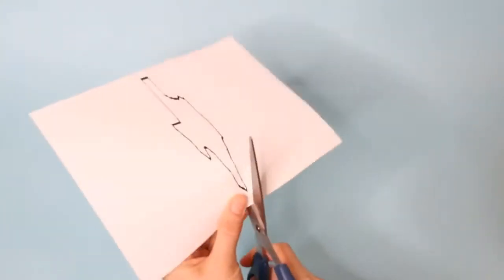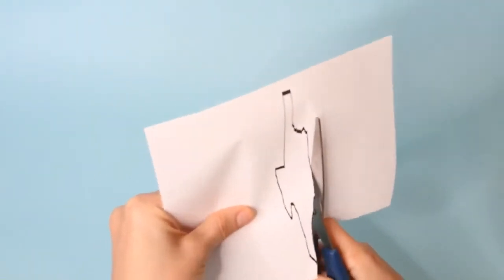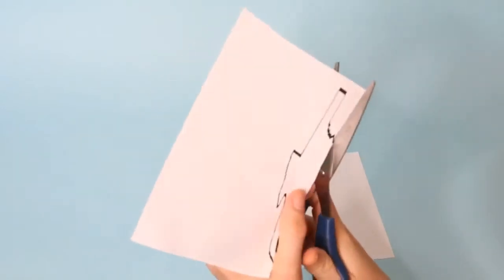First I measured the length and width of the side of the book. Then I found an outline of Texas and resized it in Photoshop to make the width the same size as the measurement of the side of the book. Next I printed it out and cut out the shape.